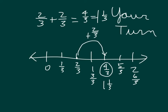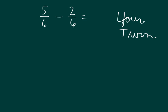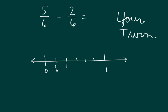Look over your work. It's your turn again — go ahead and do this problem. Utilize a number line to do your work and make sure to express your answer in simplest form. We start with zero and one as our whole numbers. We're working with sixths, so we will divide it into six parts. We'll mark each of those parts on our number line: one-sixth, two-sixths, three-sixths, four-sixths, and five-sixths.